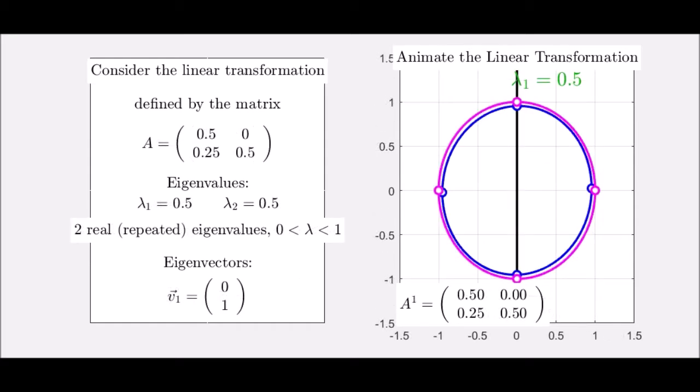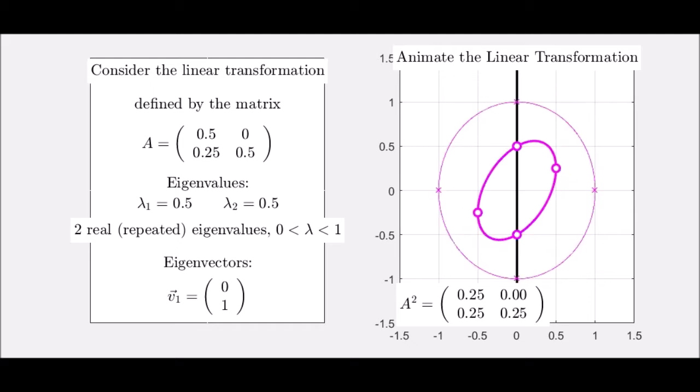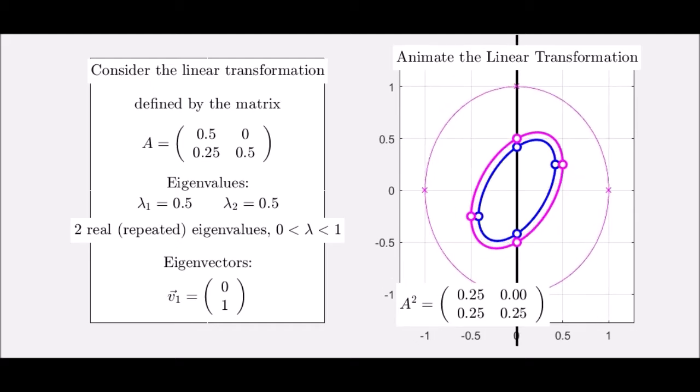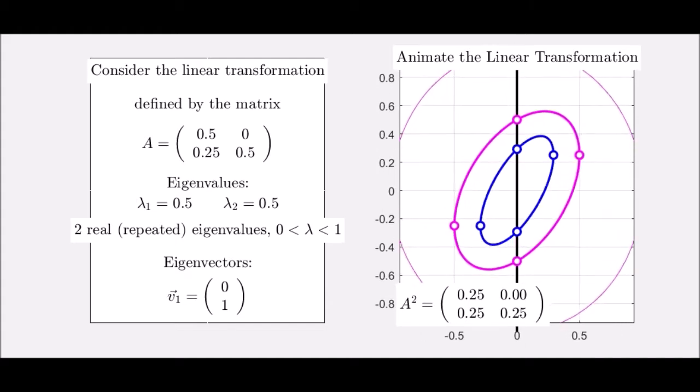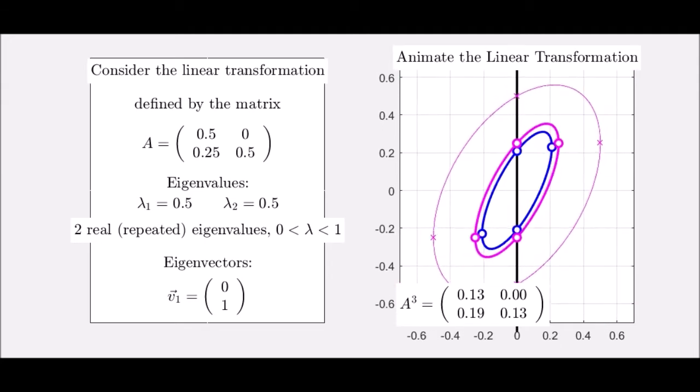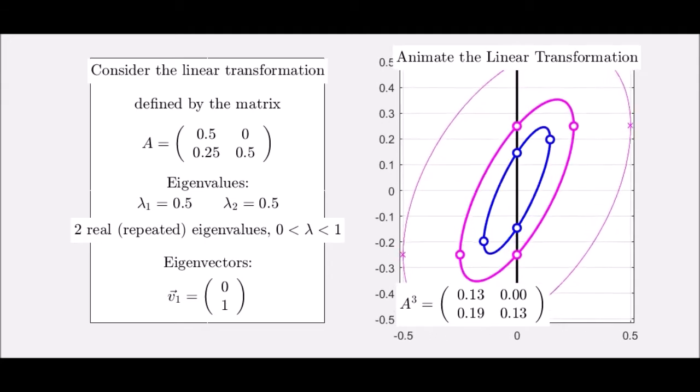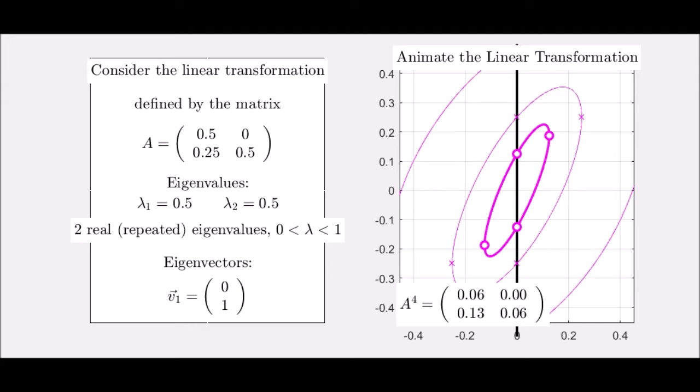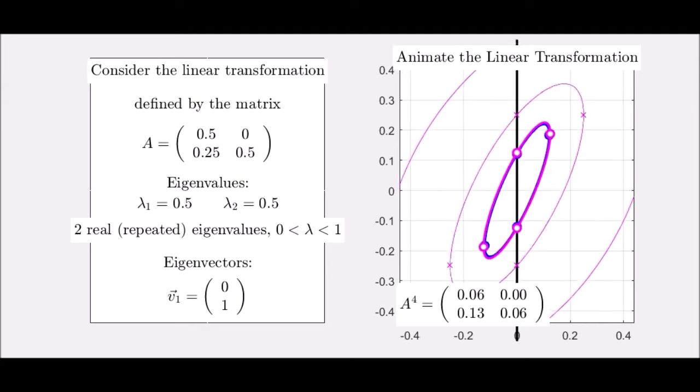A second example here has eigenvalues that are repeated but are smaller than one. So if we look at the matrix A squared, and then after that A to the third, we can see the deformation of the unit circle actually generates smaller and smaller circles. The points are becoming closer and closer to the origin.